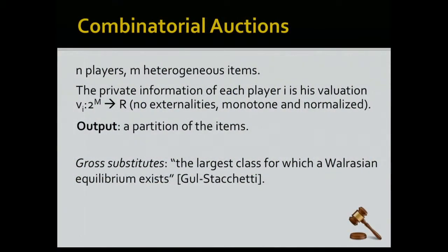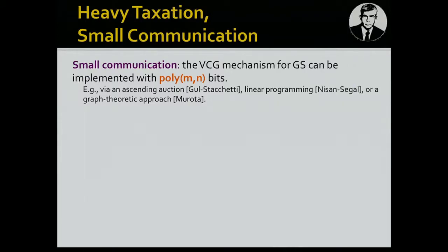In combinatorial auctions we have n players and m items. The private information of each player is his valuation — the value he assigns to each possible subset of items — with no externalities, monotonicity, and normalized valuations. We look for a partition of the items. For this example the valuations also need to be gross substitutes. I want to study the VCG mechanism applied to combinatorial auctions with gross substitutes bidders, and first claim that this mechanism has small communication.